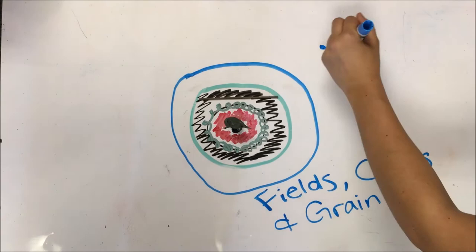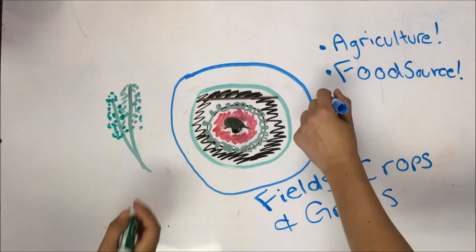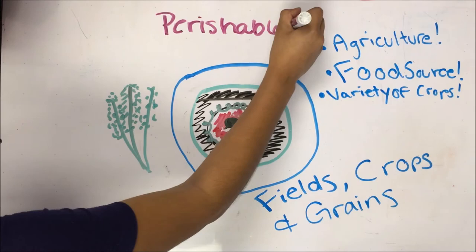The third ring in the von Thunen model represents the one that contains crops such as wheat and grains. These crops are increasingly less perishable and bulkier, but the cost of transportation does impact the price of the good.